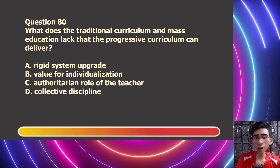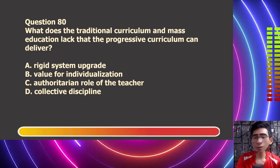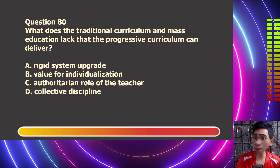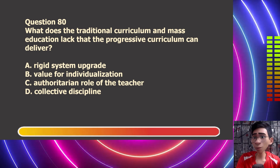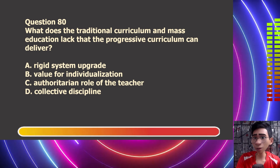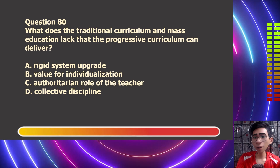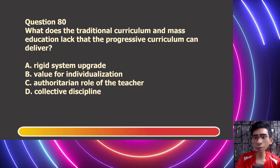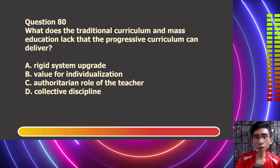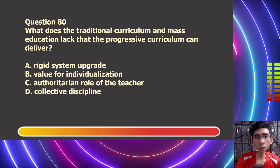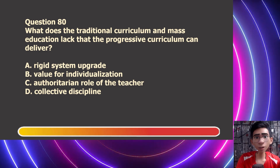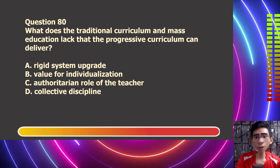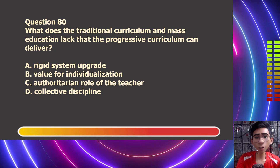Question number 80. What does the traditional curriculum and mass education lack that the progressive curriculum can deliver? Letter A, rigid system upgrade. Letter B, value for individualization. Letter C, authoritarian role of the teacher. Letter D, collective discipline.